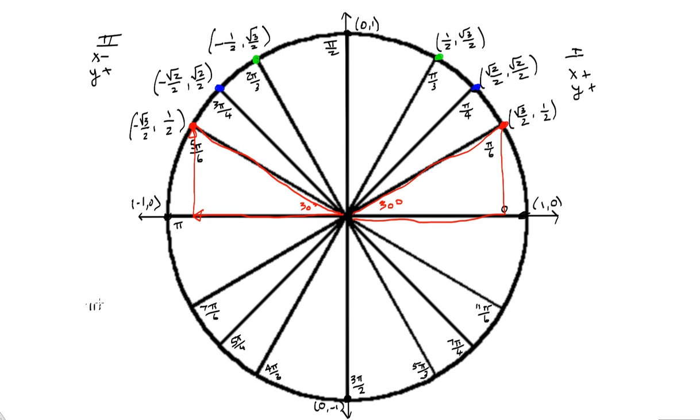In quadrant 3, what do we have? We have negative x's and negative y's. So again, I'm going to do my same symmetry. I'll actually use the same colors so you can see what we're doing. My red coordinate corresponds to my π/6 coordinate here, but they're both going to be negative. So this is -√3/2, -1/2. This would be -√2/2, -√2/2, because both x's and y's are negative in the third quadrant. And this one will be -1/2, -√3/2.